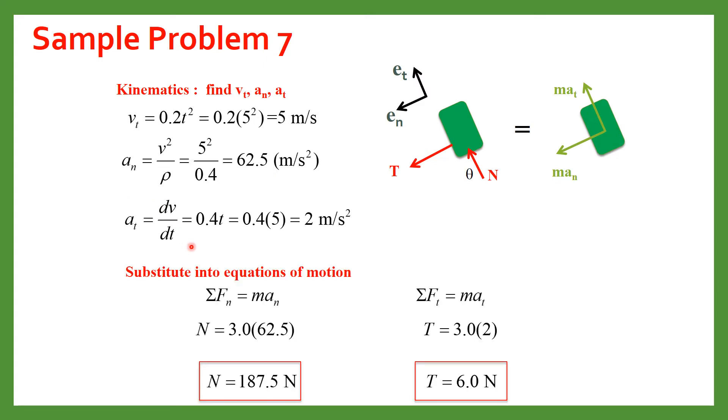Now you will substitute the value into the equations. So when you will substitute the value N comes out to be 187.5 Newton because M we know 3, AN we have just calculated when we multiply this the answer is this. Similarly you can calculate T which is 6 Newton.